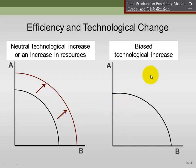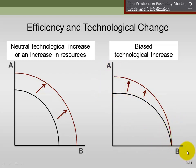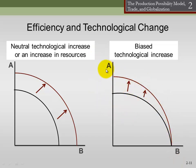A biased technological increase — which I think is the normal way things happen — improves our ability to produce one good more than other goods. In this case, all the production increase happens in good A and none in good B. Notice that the only point along the production possibilities curve not affected by this technological increase is where we produce all B. Why? Because now it's cheaper to produce A, which means we have more resources left over to produce B. So even a technological increase that's biased toward good A might also help us increase production of good B.